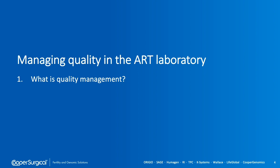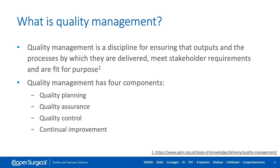So what do we mean by quality management? Definitions vary a little, but this is taken from the website of the Association of Project Managers and it's a good example. It states that quality management is a discipline for ensuring that outputs or services and the processes by which these are delivered meet stakeholders' requirements and are fit for purpose.